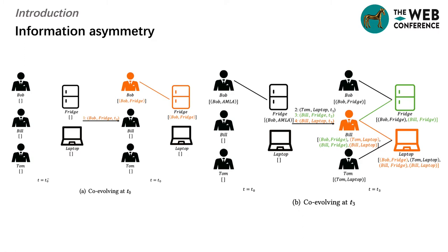However, existing models only update the convolutional and co-evolutional information along the timeline, which results in information asymmetry for the nodes updated early. The algorithm on the streaming graph cannot obtain the global interaction graph, but only obtains the local information of the interaction and the two interactive nodes. Therefore, the historical interaction information is expressed through the embeddings of the two interactive nodes, and each interaction will share their historical interaction information held by the two interactive nodes. Nodes that interacted early hold less interaction information than nodes that interacted later, which leads to information asymmetry.